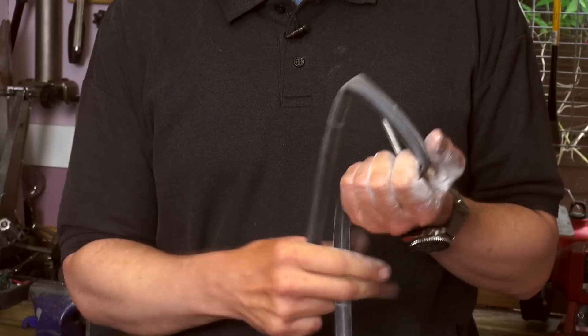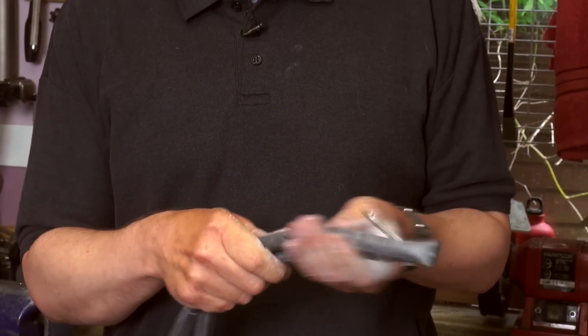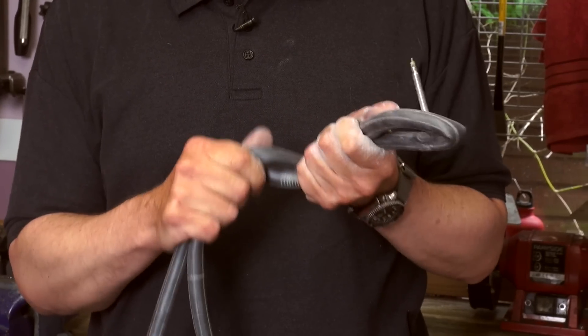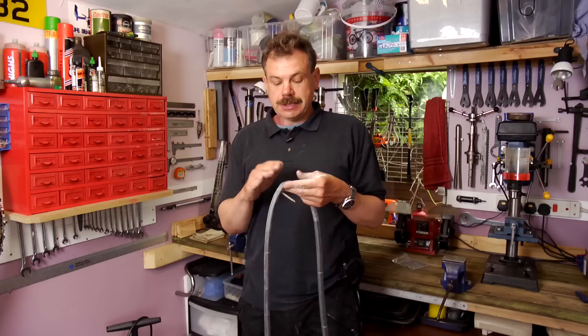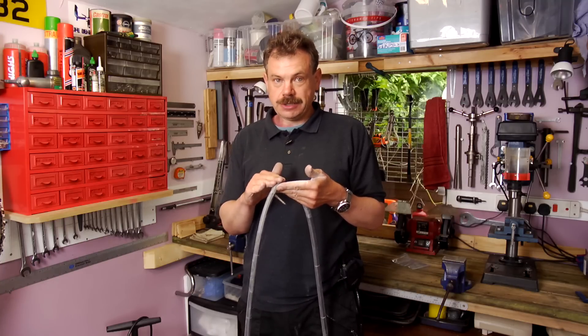Also, when you're changing the tube, the tube is much easier to handle when it's covered in dry lubricant and it's not sticky rubber. The talcum powder will also stop the inner tube sticking to the inside of the tyre.